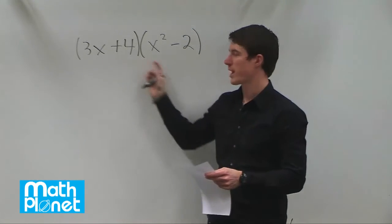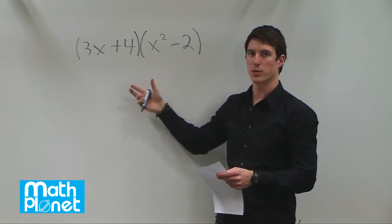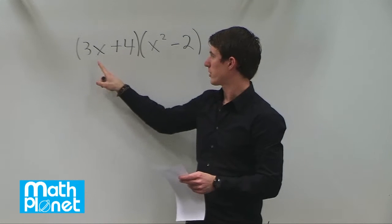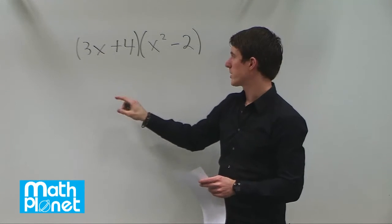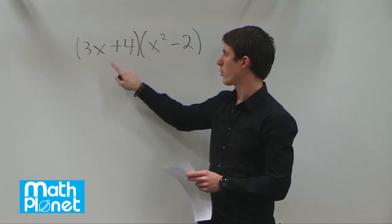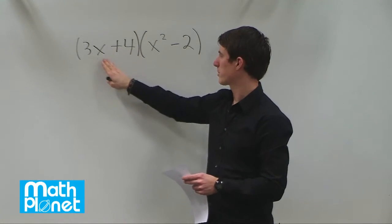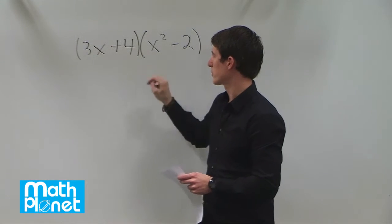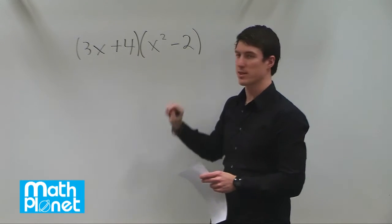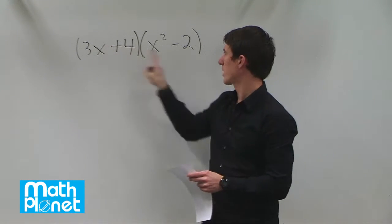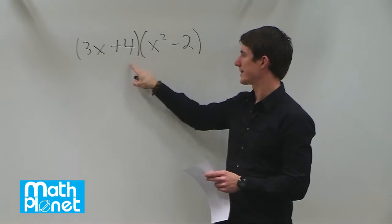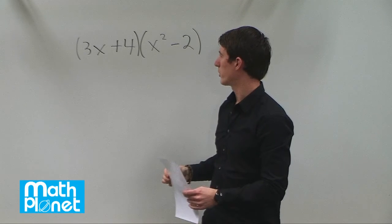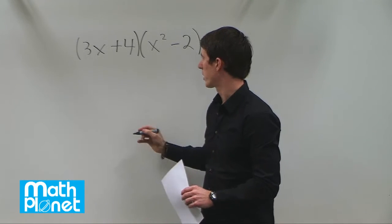If we expand this, we can rewrite it in a slightly different way. Let's use our order of operations for expansion — FOIL, as it's sometimes called. That stands for first times first, inside times inside, outside times outside, and last times last. FOIL is our mnemonic here.